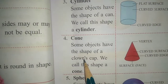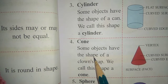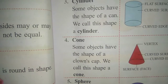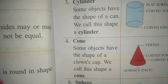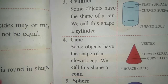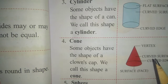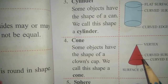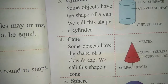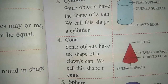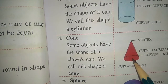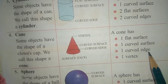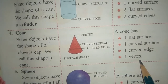The fourth shape is cone. Some objects have the shape of a clown's cap. We call this shape a cone, such as a crown shape and a birthday cap. A cone has a vertex or point, a curved face, and curved edges. It has one curved surface, one edge, and one vertex.